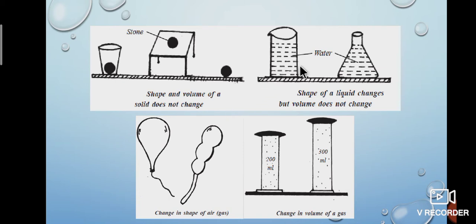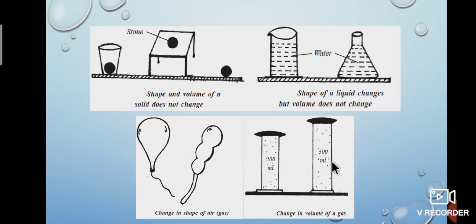See the second picture — water in a 100 ml beaker and a 100 ml conical flask. Observe the shape of the water — water takes the shape of both containers. So liquids like water and oil have a definite volume but do not have a definite shape. See the third picture — air in two balloons has different shapes. If you fill a 200 ml jar with nitrogen gas, the volume of the gas matches the container. You can understand from this activity that gases do not have a definite shape or volume.